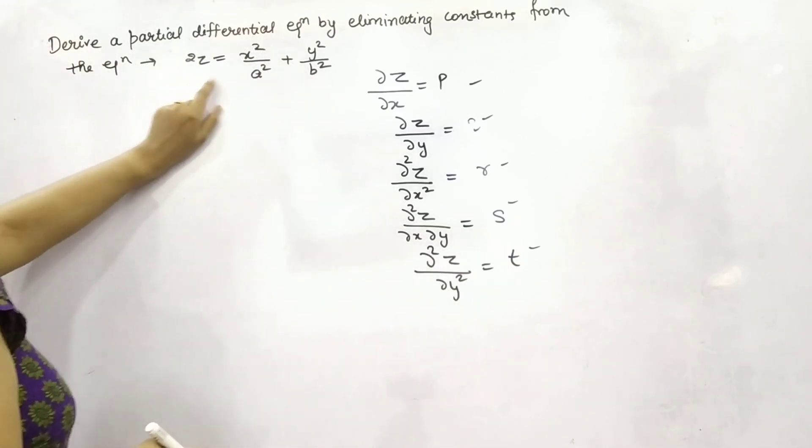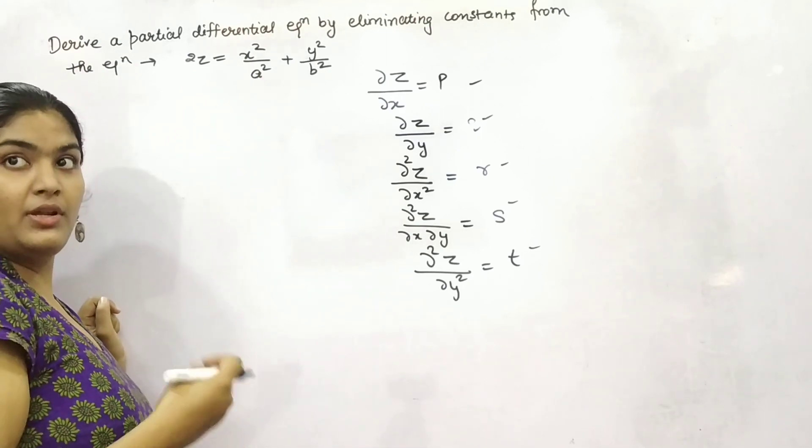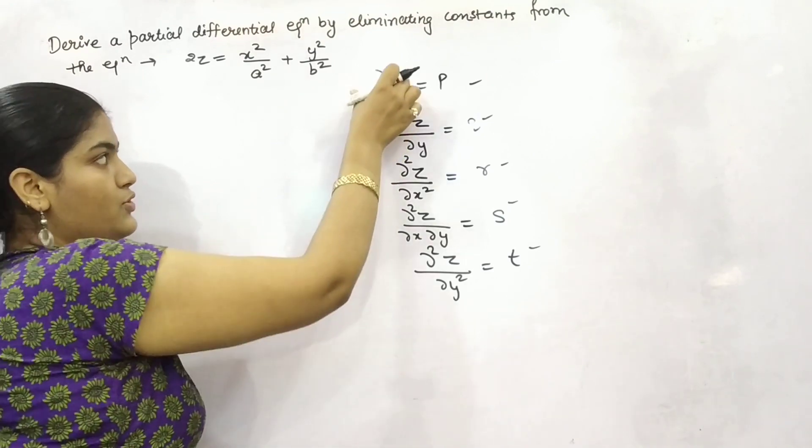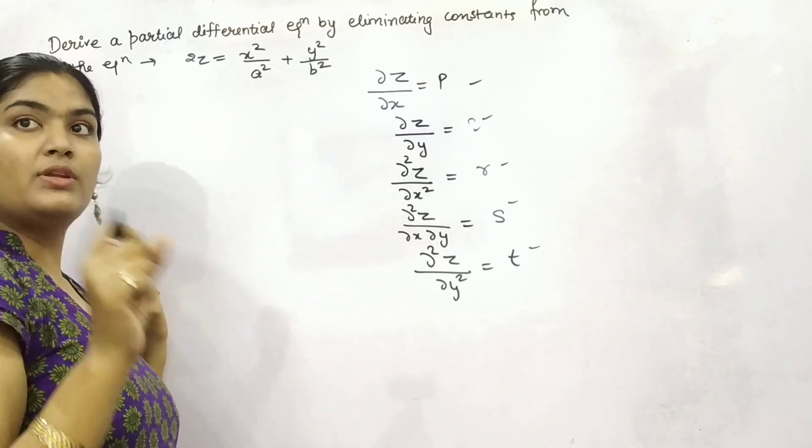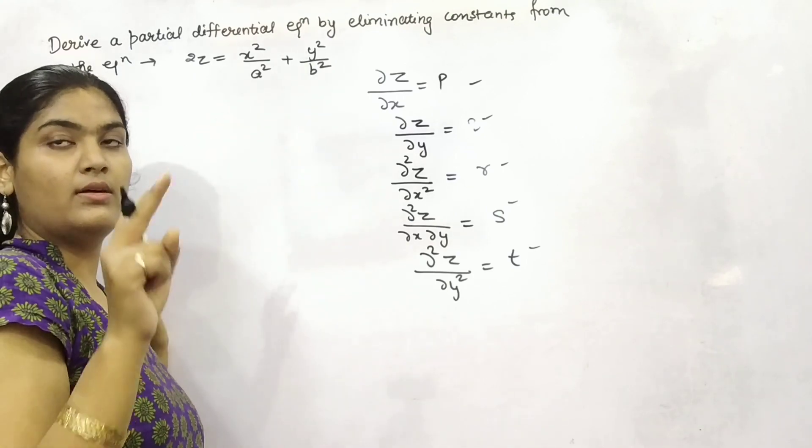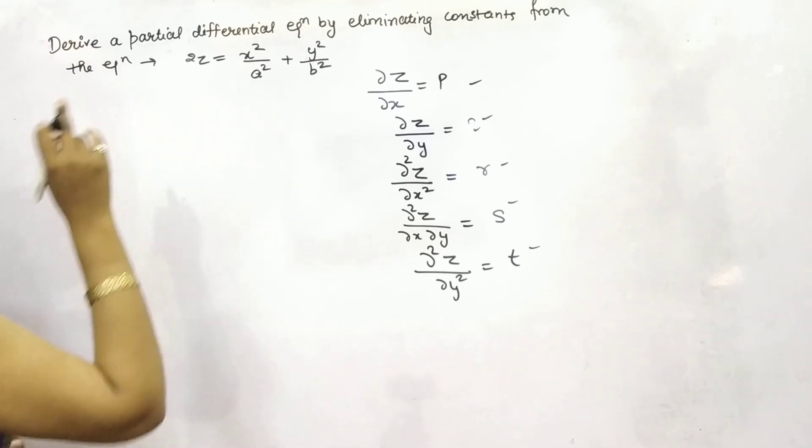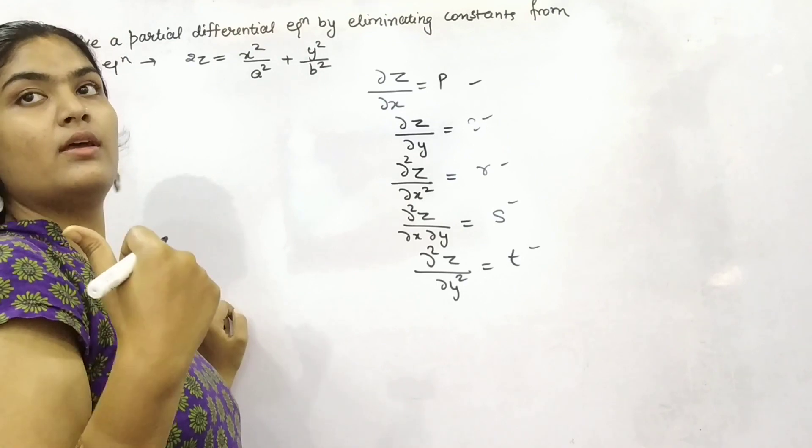You can see here 2z is given to you. So for partial differential equation what you need to do? You have to use these operators. Because there are two variables so differentiate it twice. Because these are two constants so differentiate it with respect to two variables, first x and then with respect to y.